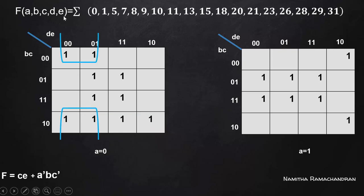The next match has no corresponding match in the other KMAP, so this is the maximum possible combination. For these four cells, A equals 0 and C equals 0 are common, and D equals 0 is also common across these four cells. So the simplified form is A-complement, C-complement, D-complement.